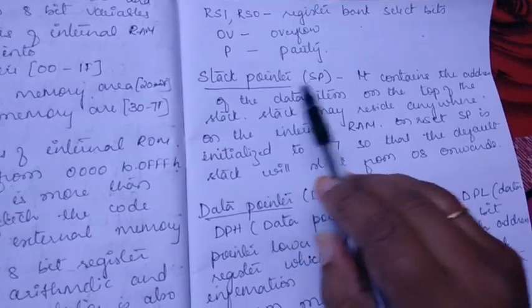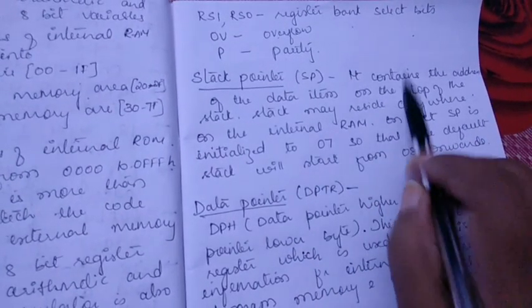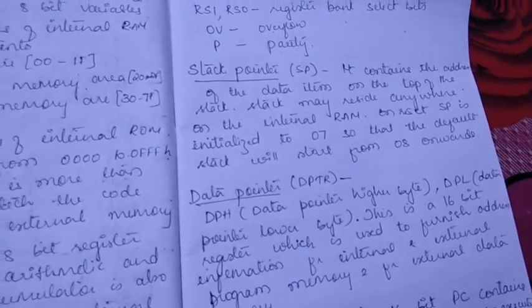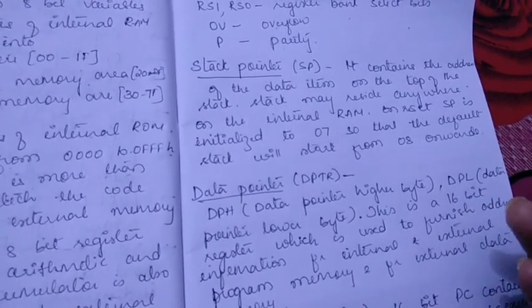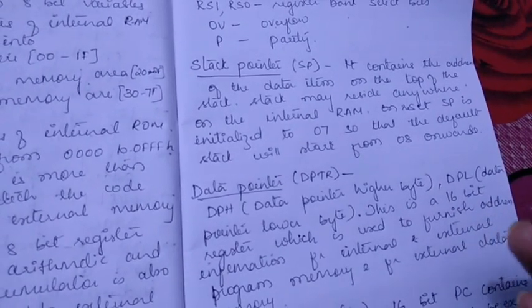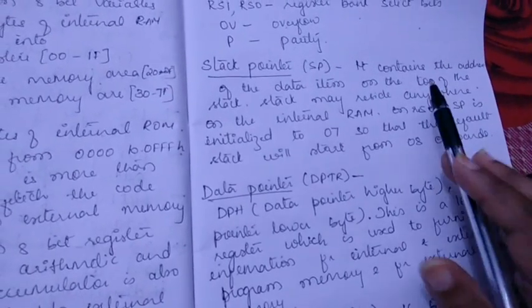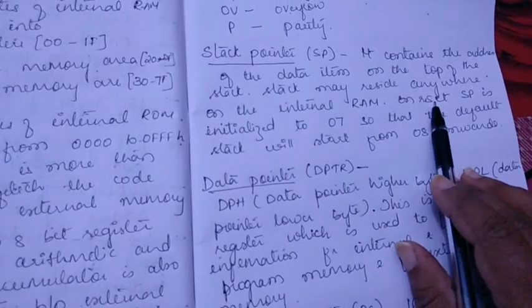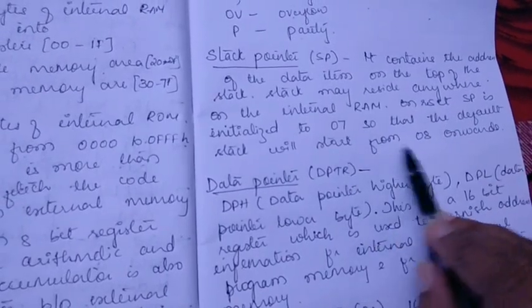Next is stack pointer. Stack pointer contains the address of the data item on the top of the stack. Stack may reside anywhere on the internal RAM. On reset, stack pointer is initialized to 07 so that the default stack will start from 08 onwards.